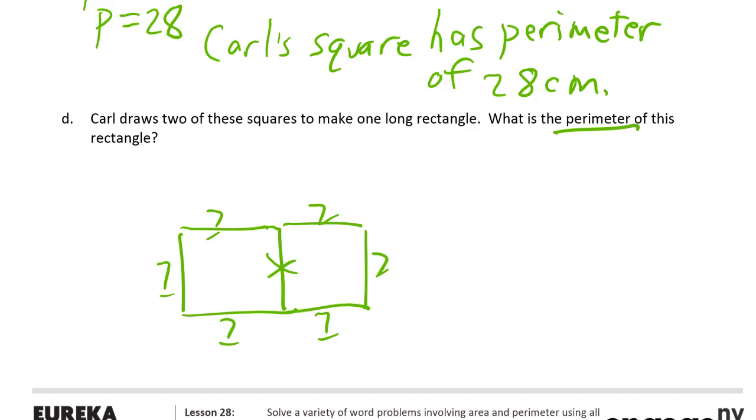And this is perimeter, so I'm always going to do addition. One, two, three, four, five, six sevens. So perimeter, six sevens is 42.